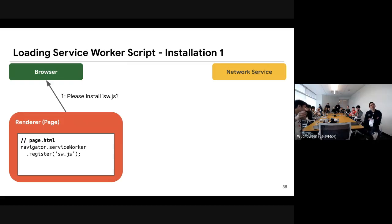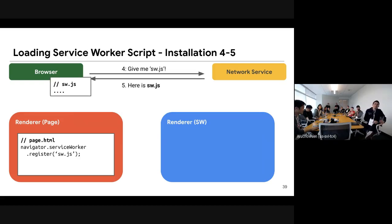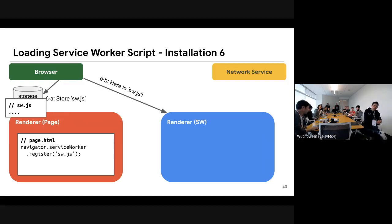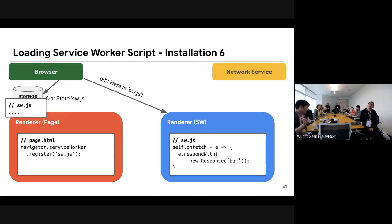In that case, the renderer for the page sends an IPC message to the browser process: 'please install sw.js'. Then the browser starts the render process for the service worker. The render process requests sw.js from the browser, the browser requests sw.js from the network service, and the network service gives the response to the browser. The browser process then stores sw.js, and sends the response to the render process so the render process for the service worker finally gets the script.